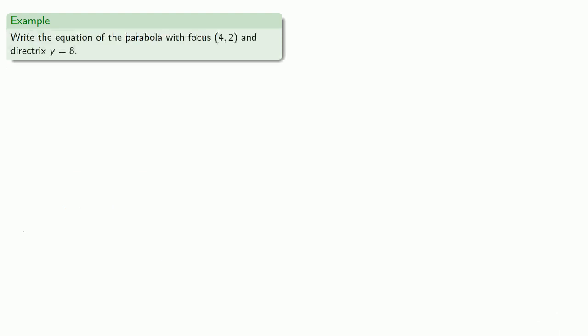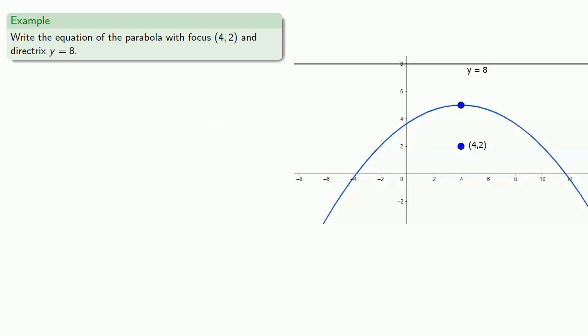Or let's try to write the equation of a parabola with focus (4, 2) and directrix y equals 8. So let's start by graphing this information. So to begin with, the vertex is midway between the focus and the directrix. And so this means it will be at (4, 5).